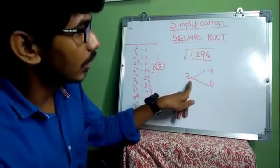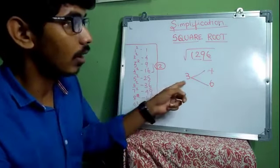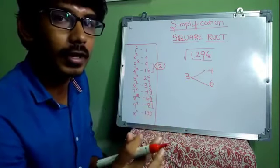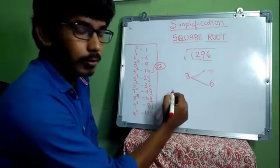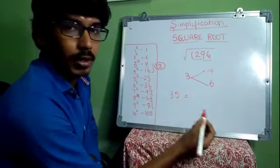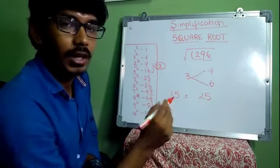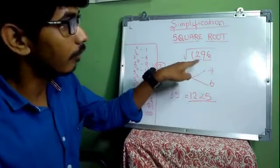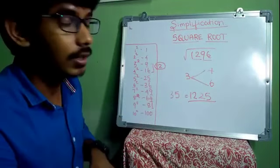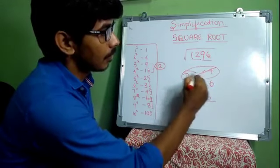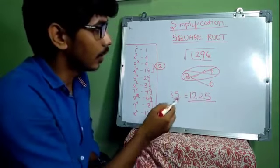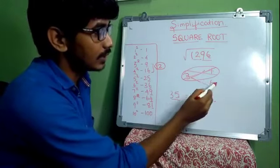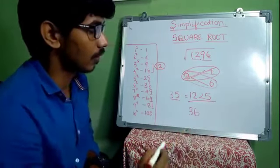So we have 3 as the tens digit, but we don't know whether it is 34 or 36. To decide, we find 35² using the easy method: 5² = 25, tens digit 3, next is 4, so 4 × 3 = 12, giving 1225. Our number is 1296, which is higher than 1225, so 34 won't work — the answer must be 36.